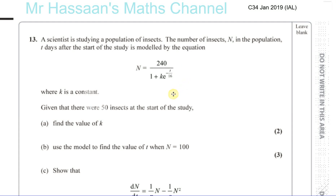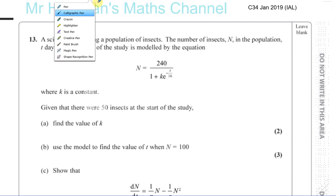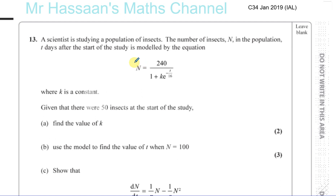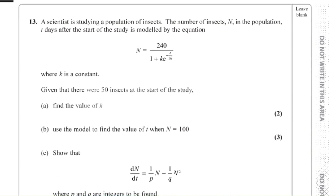This is the January 2019 IAL paper C34, question number 13, which is the final question on the paper. A scientist is studying a population of insects. The number of insects N in the population, t days after the start of the study, is modeled by this equation. So t is the number of days and N is the number of insects. K is a constant.